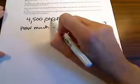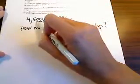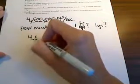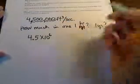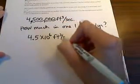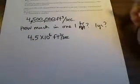So if you take your decimal point and you move it, I'm going to have to move it 1, 2, 3, 4, 5, 6, then this number is the same thing as 4.5 times 10 to the sixth power. And this is feet cubed per second.